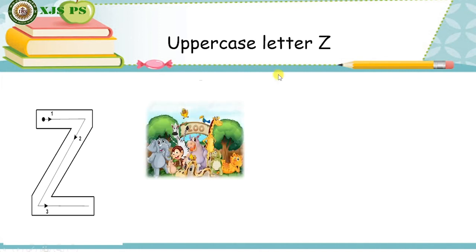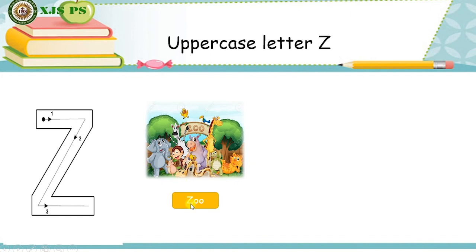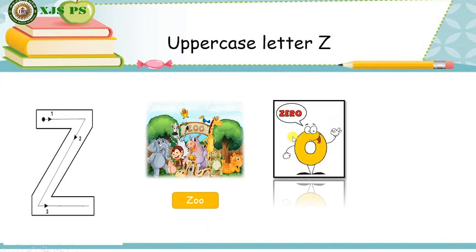What is it, everyone? Do you see a lot of animals at the same place? Yes, everyone, please repeat after me. And then we go to the next word. Everyone, what do you see? What number is it? Yes, it is a number zero.